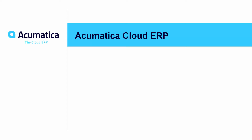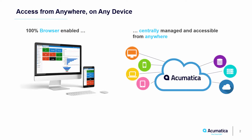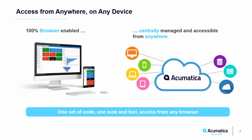Acumatica Cloud ERP — Mobility. Acumatica was built for the cloud and for the mobile workforce. It runs on any device using an internet browser and can be easily accessed from a tablet or smartphone. The Acumatica mobile application is currently available in your device store for your iOS or Android device.